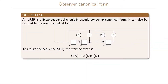The LFSR that we have seen previously has been realized in controller canonical form. It is also possible to realize the LFSR in observer canonical form. Again we will have the sequence S which equals the polynomial P divided by the connection polynomial C. The difference here is how we denote the taps in the connection polynomial. Here where C equals 1, this C will be close to the output of the LFSR while the other C will be close to the input to the LFSR. Instead of having only one feedback, we now have potential feedback to the input of every D element in our LFSR.